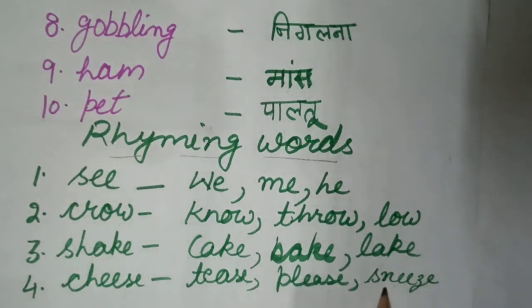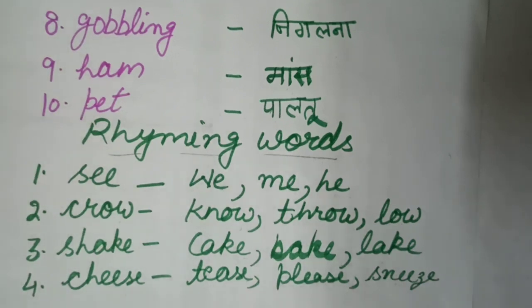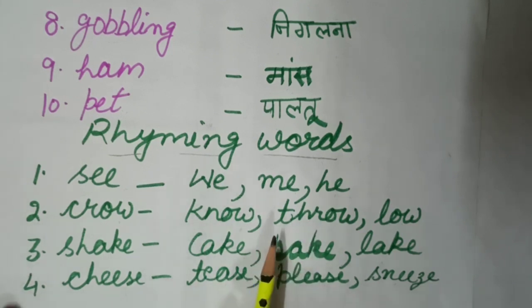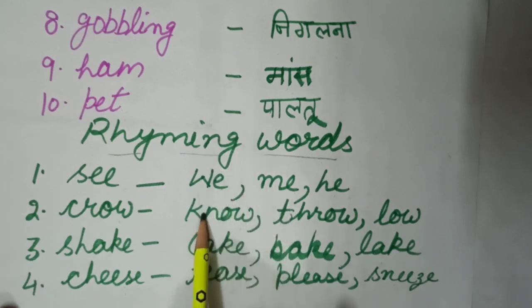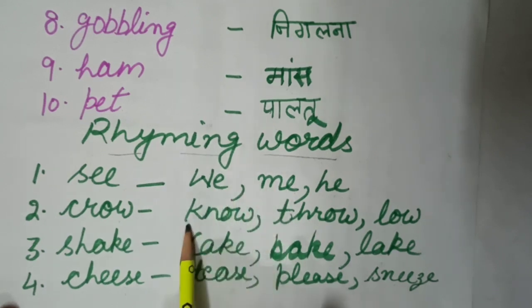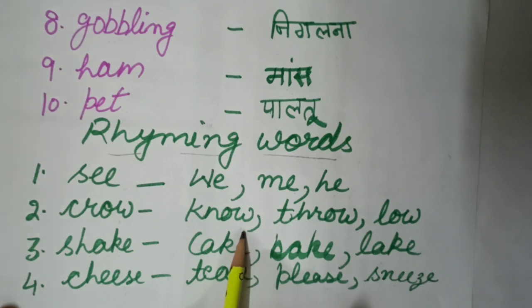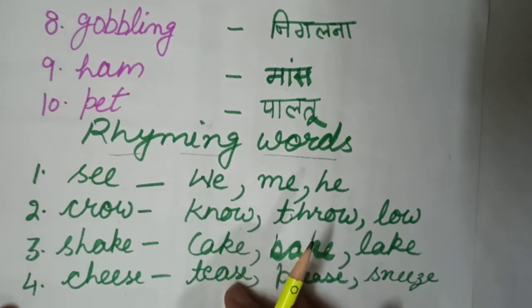These are the rhyming words. You can also underline the rhyming words in the poem. This exercise is also given in your book, so there is no need to do this exercise in the notebook. We will do this in the book only.